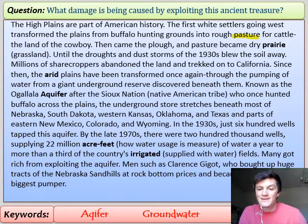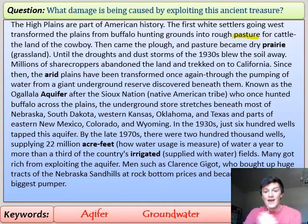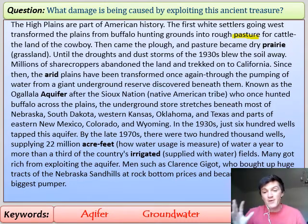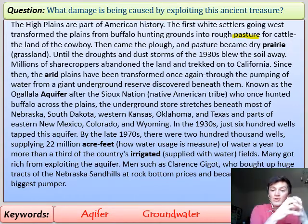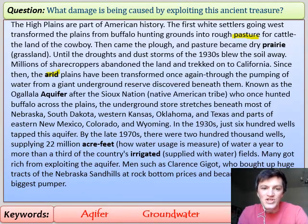Then came the droughts and dust storms of the 1930s. The land had been overused — the soil lost its nutrients, dried out, and when storms and winds swept over it the soil was carried away because it had no nutrients or water to hold it together. Millions of sharecroppers abandoned their farms because they couldn't grow anything, and they trekked to California. This links to our earlier lesson on the demand on California's water supply. Since then, the arid plains have been transformed through pumping water from a giant underground reserve.